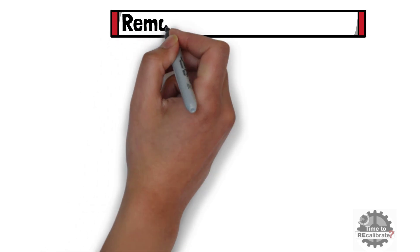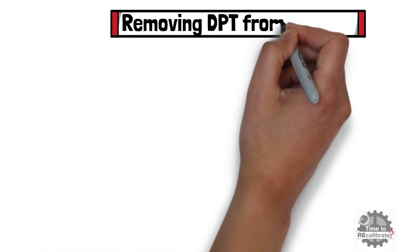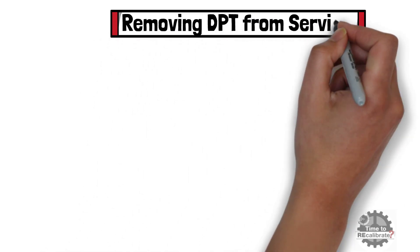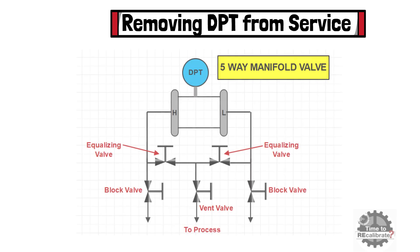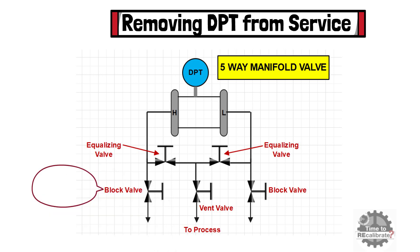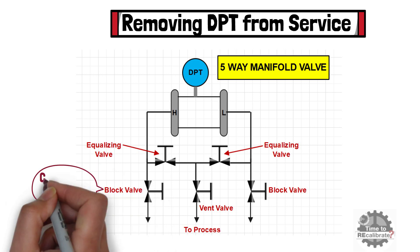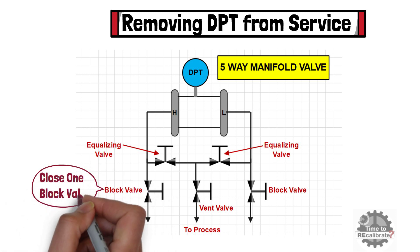In this section, I am going to show how to remove the differential pressure transmitter from service when 5-way manifold valves are connected with the DPT. To remove the DPT from service, first of all, close any one of the block valves.